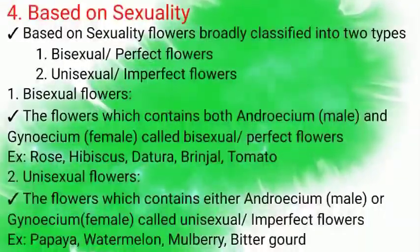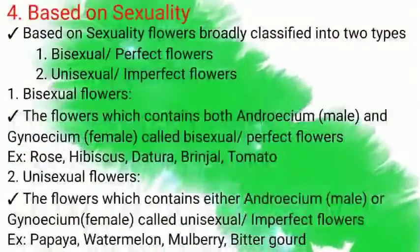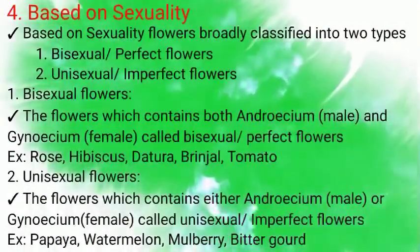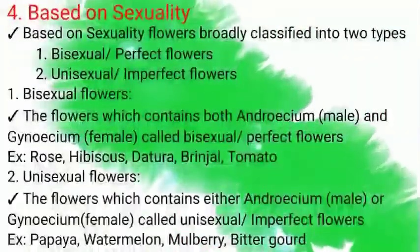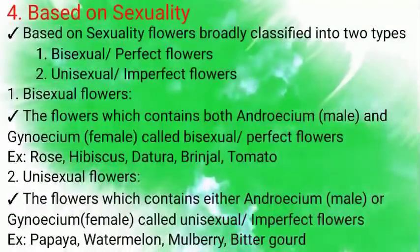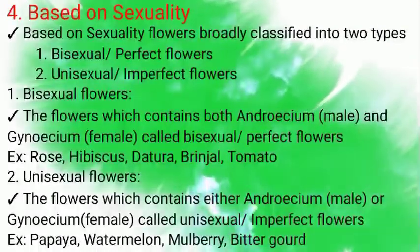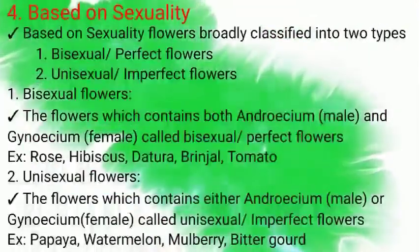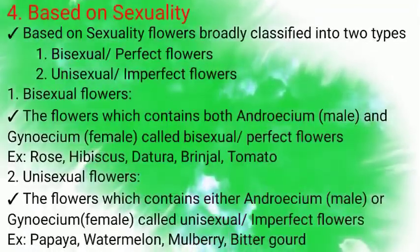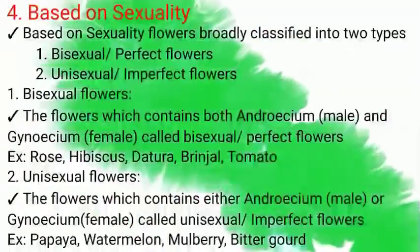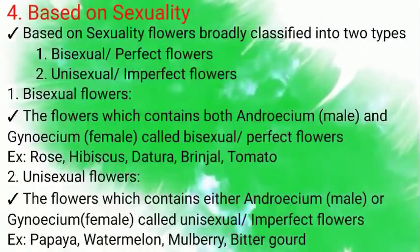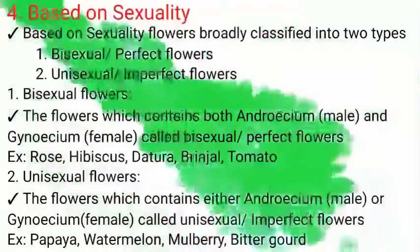The fourth aspect of classification of flowers is based on Sexuality. Based on Sexuality, flowers are broadly classified into two types: Bisexual or Perfect Flowers, and Unisexual or Imperfect Flowers. Bisexual Flowers contain both Androecium (male) and Gynoecium (female) parts. Examples: Rose, Hibiscus, Datura, Brinjal, and Tomato.